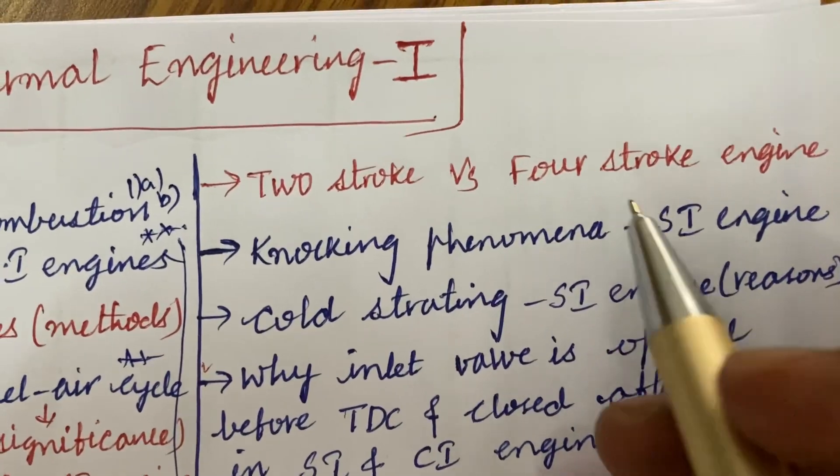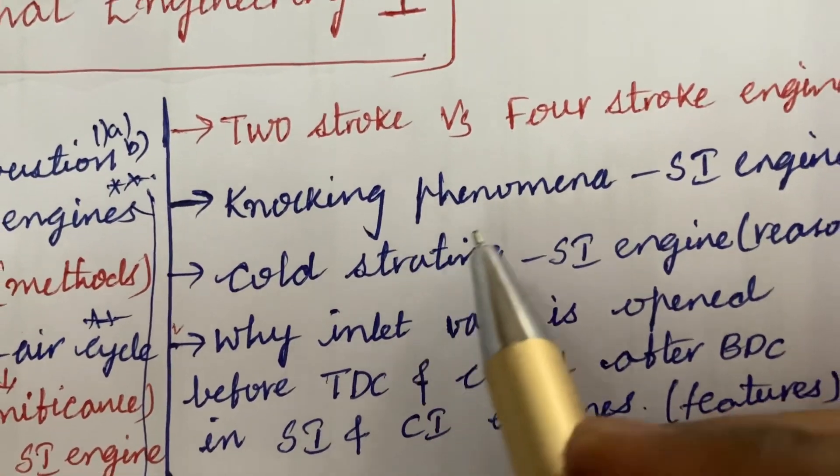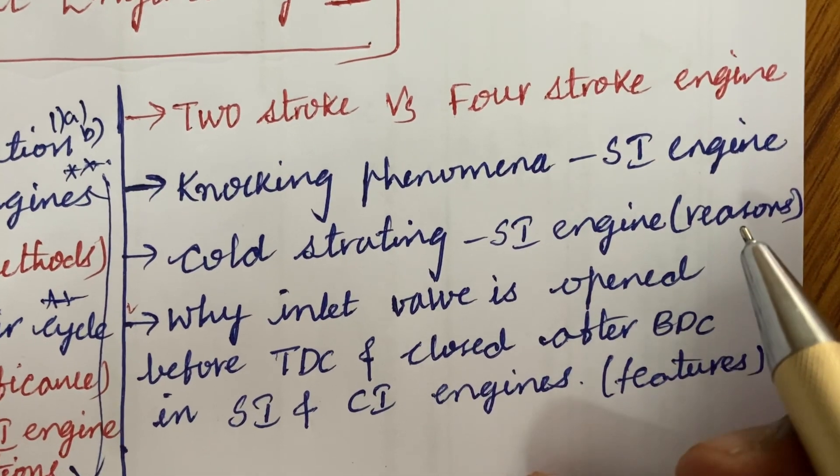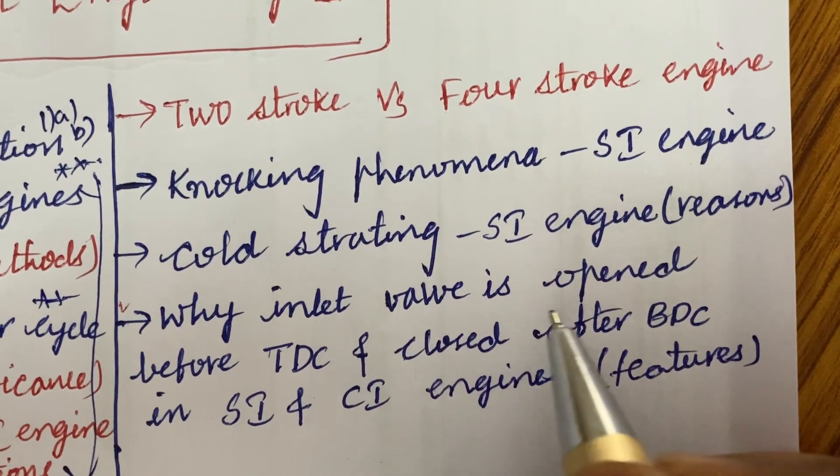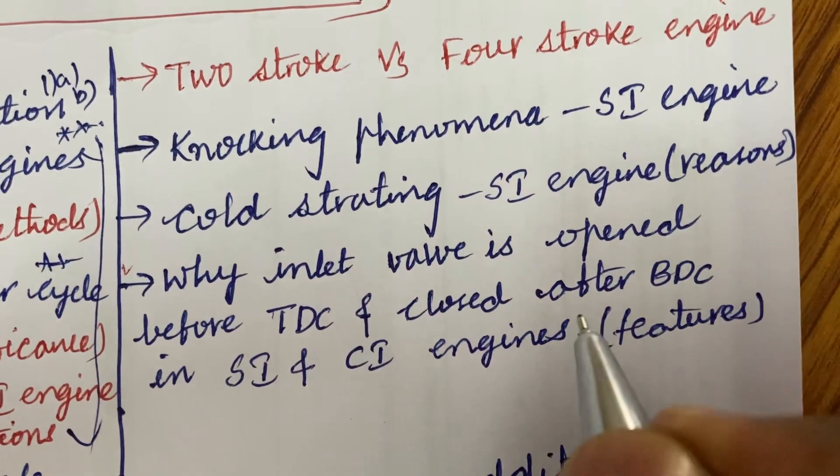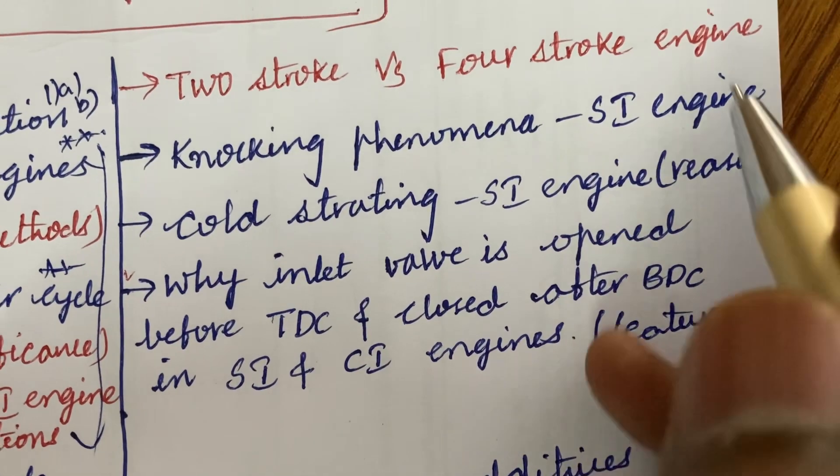The 2-stroke versus 4-stroke engine differences and the knocking phenomenon in SI engine and cold starting in SI engine and the reasons for that and why inlet valve is open before TDC and closed after BDC in SI and CI engines and the list of the features.